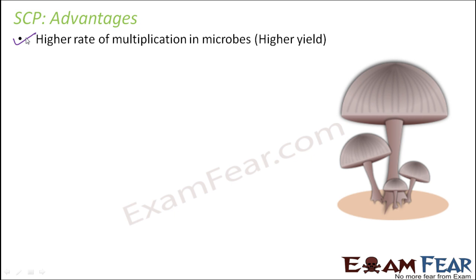If you try to compare with an animal — for example, a cow — if a cow produces around 200 grams of protein per day, then in the same time, 250 grams of microorganism can actually produce 25 tons of protein. So just imagine the difference: the cow is able to produce 200 grams of protein, while the microorganism is able to produce 25 tons of protein. There is no comparison as far as yield is concerned — microorganisms will definitely give a higher yield compared to animals.